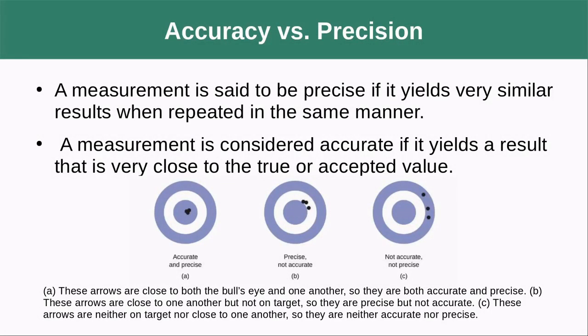So accuracy versus precision. We're going to look at this in one of our labs as well. A measurement is said to be precise if it yields very similar results when repeated in the same manner. And a measurement is considered accurate if it yields a result that is very close to the true or accepted value.